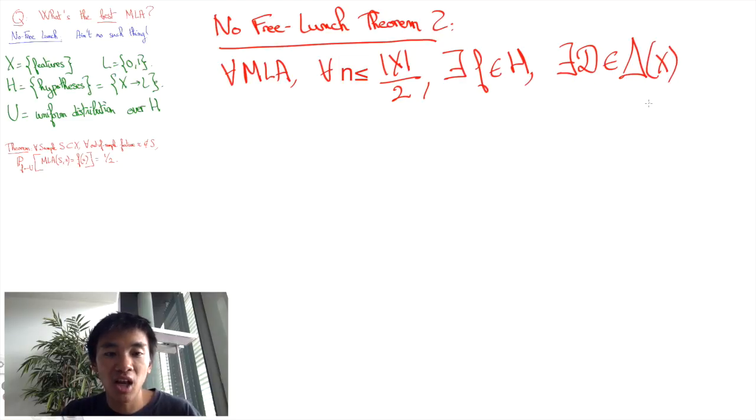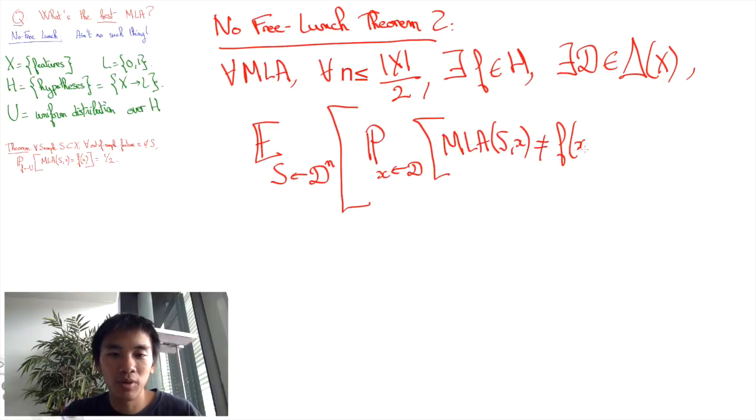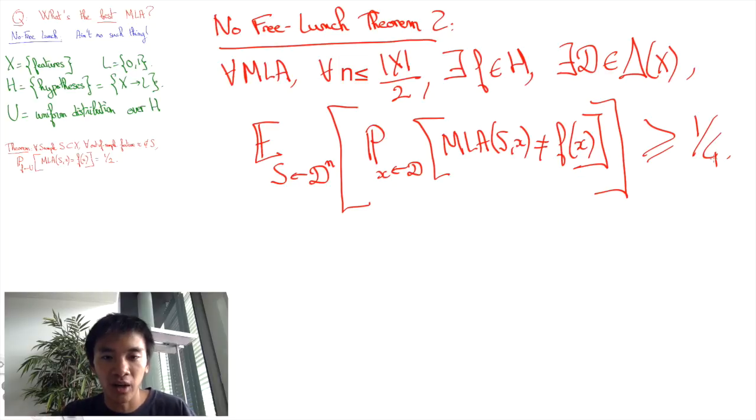In other words, for any machine learning algorithm, there is a machine learning problem in which the machine learning algorithm behaves poorly. And this is not really because the machine learning problem is especially difficult. You can devise other machine learning algorithms that will solve the machine learning problem.